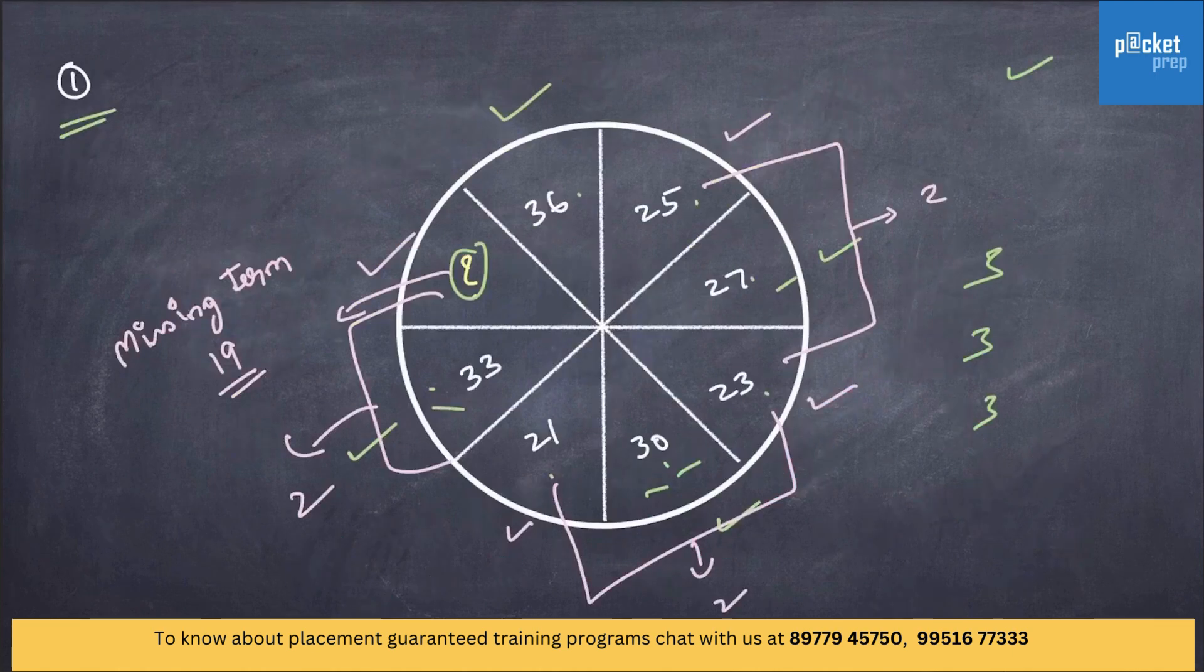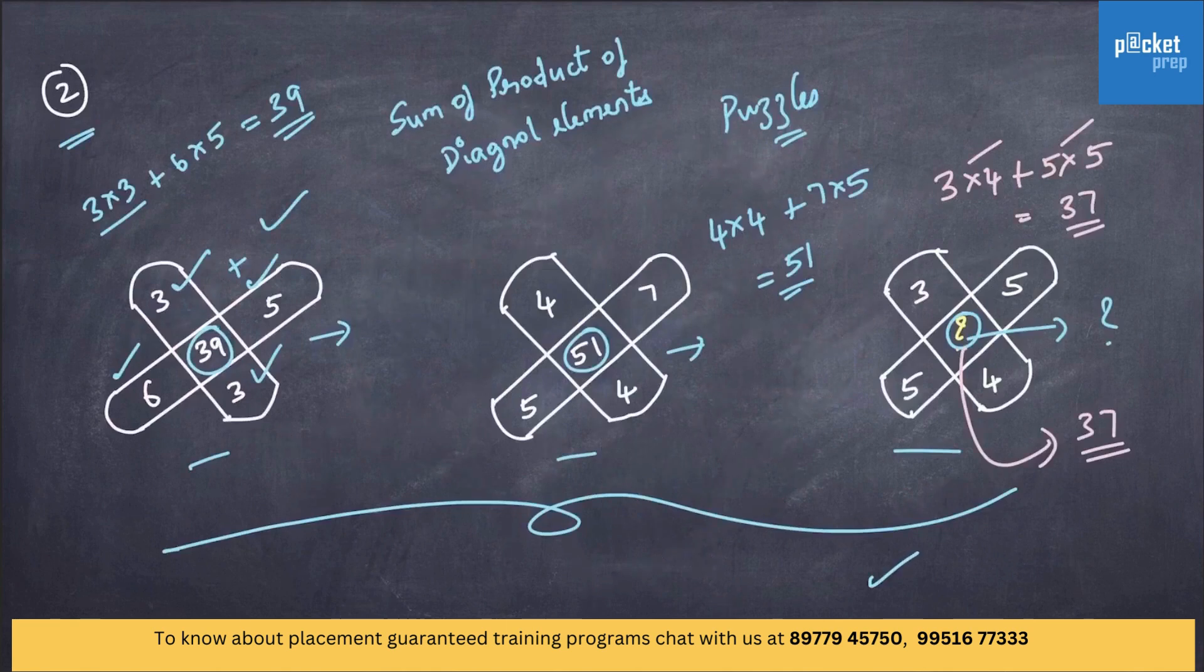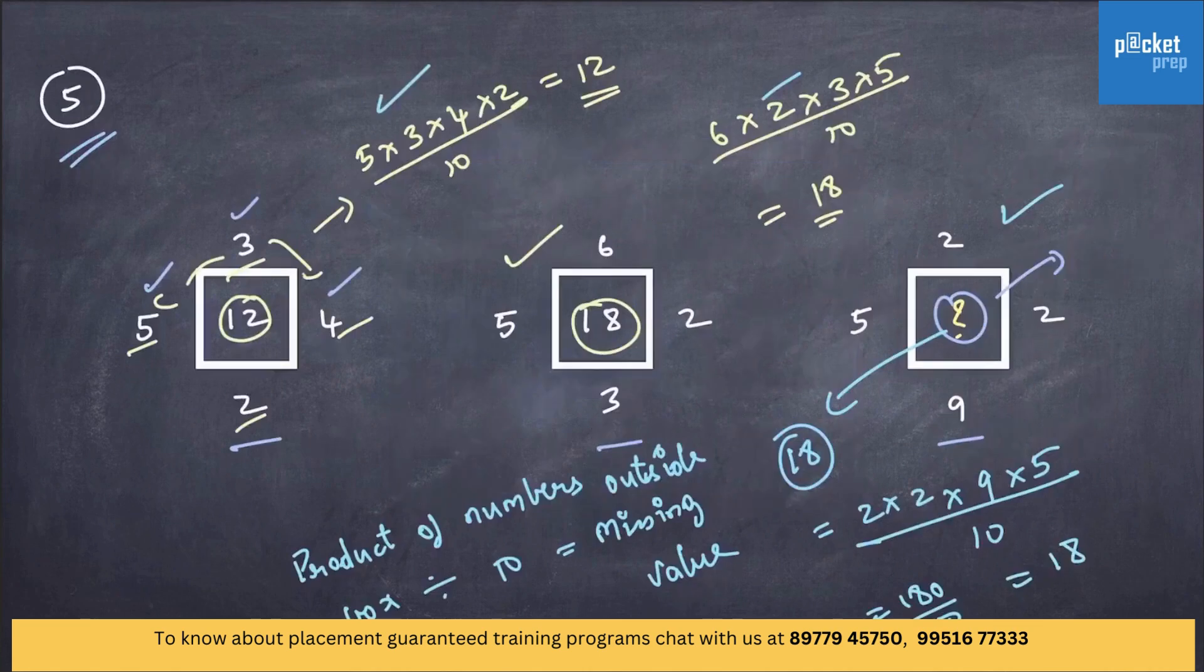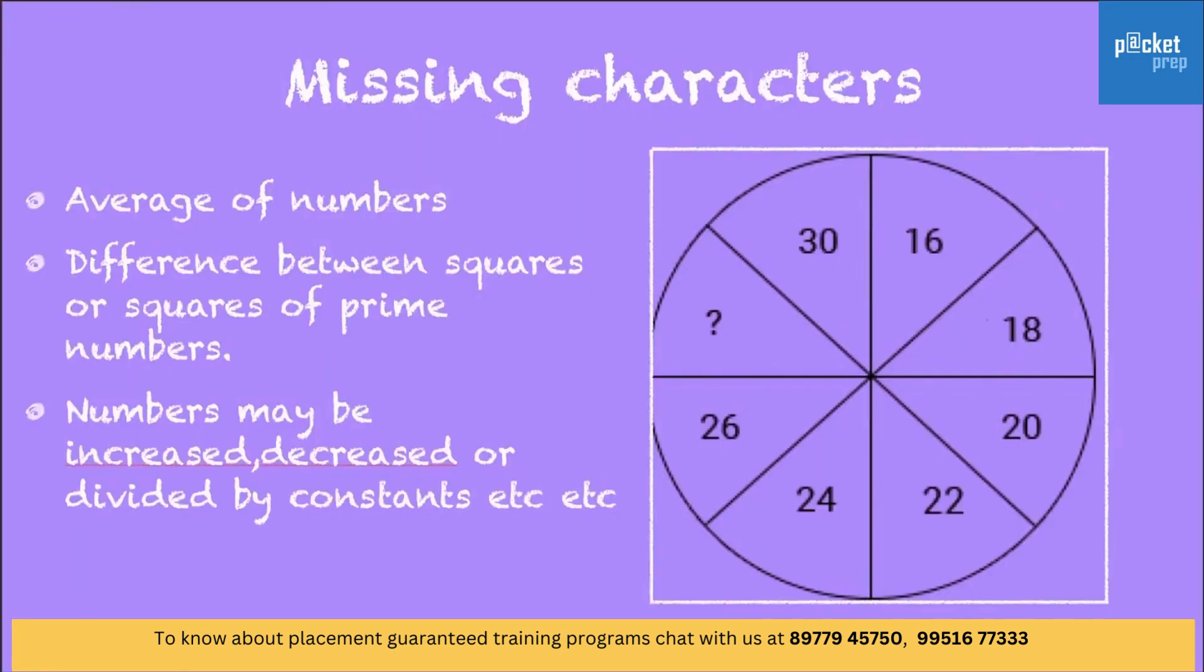So, each and every question has different ways and different patterns to be followed. Finally, missing character may be the average of numbers, difference between squares or squares of prime numbers, or the numbers may be increased, decreased, or divided by constants. And there are so many other patterns which are unpredictable. It is important that you observe clearly and find out a familiarity in them.